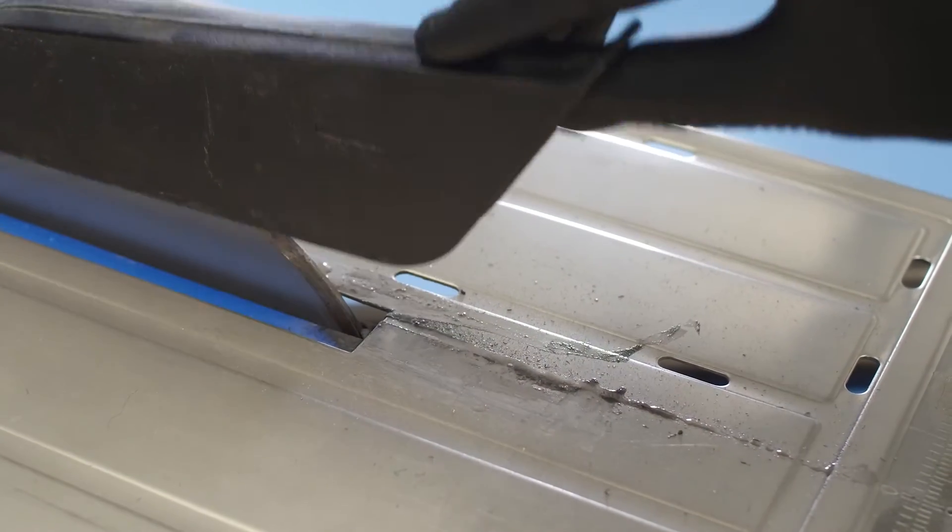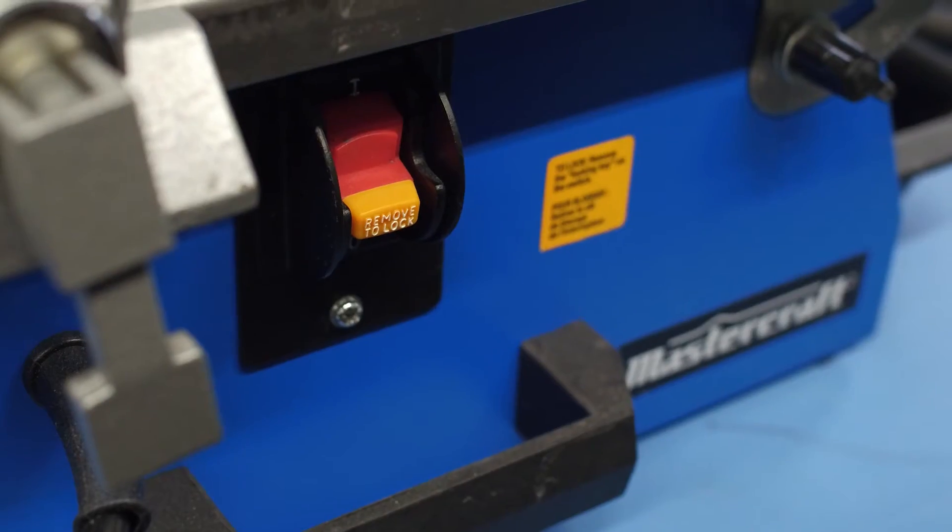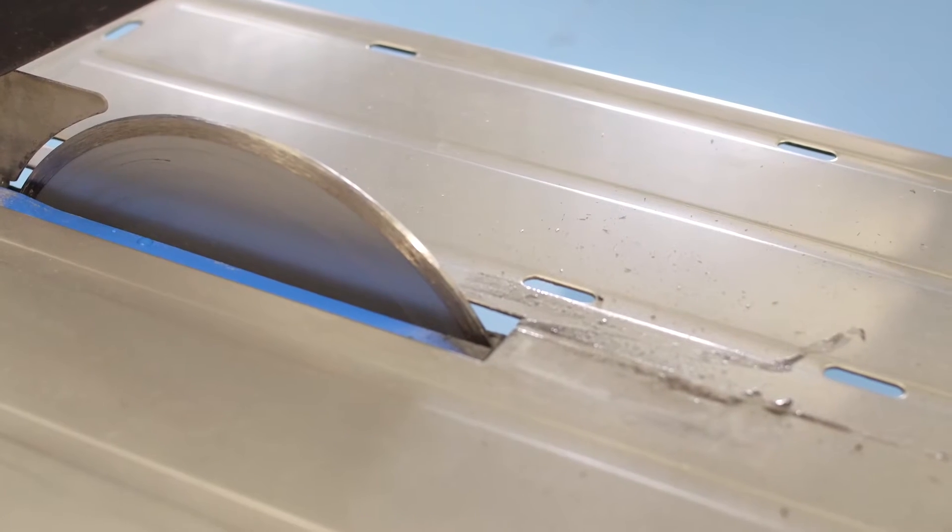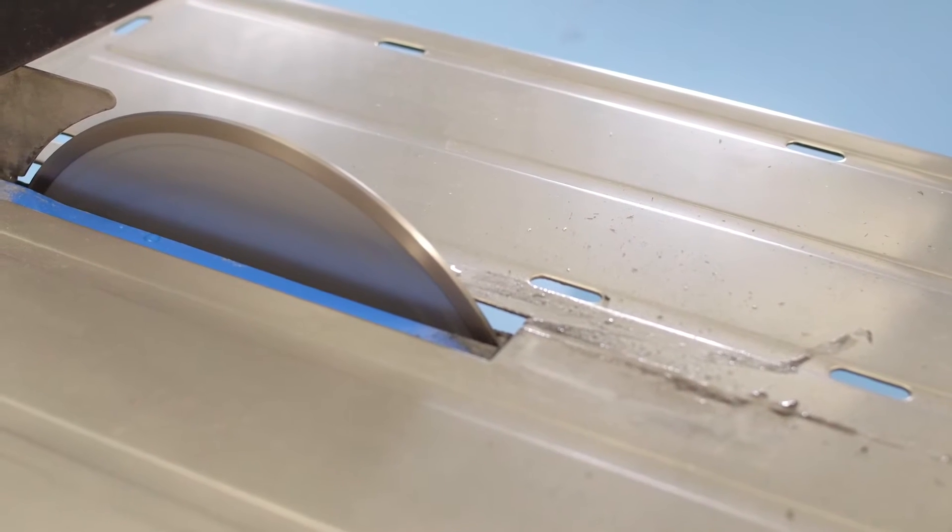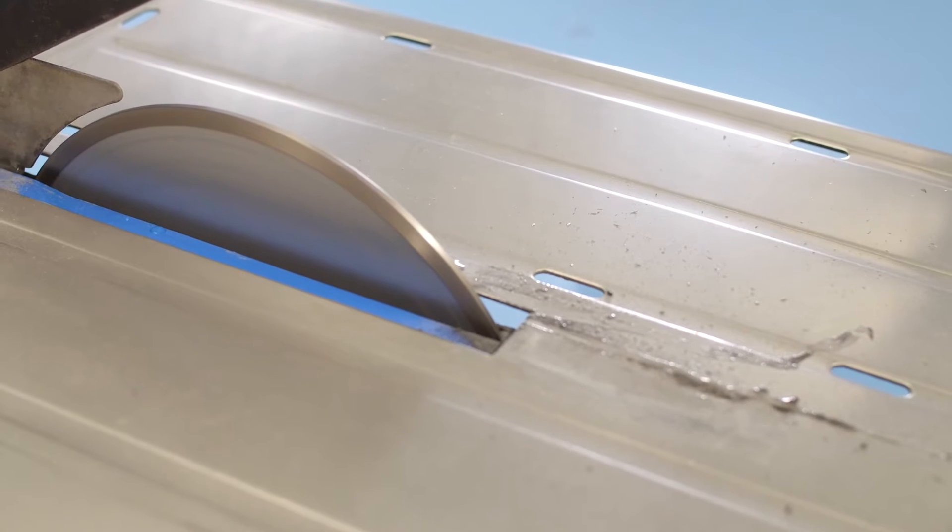The tile saw uses a diamond-coated abrasive blade, which results in a much cleaner cut than over traditional saws. It is also water-cooled, which helps control the dust that is created from the cut.